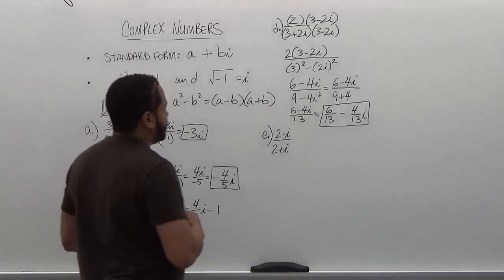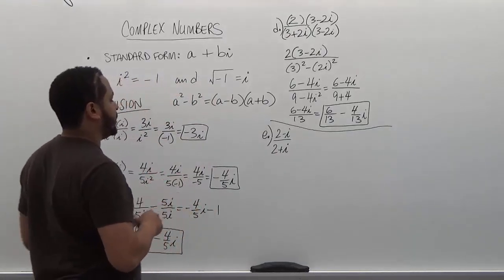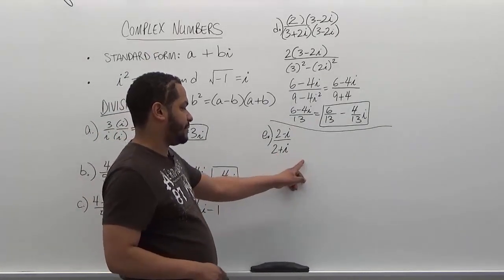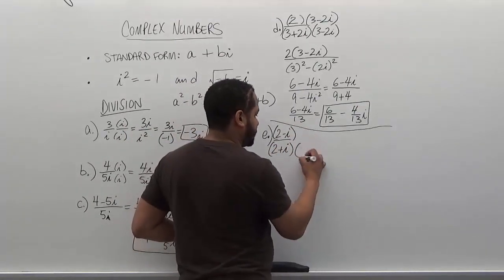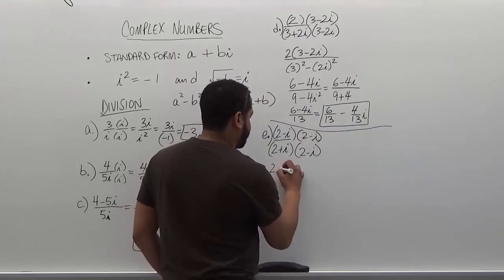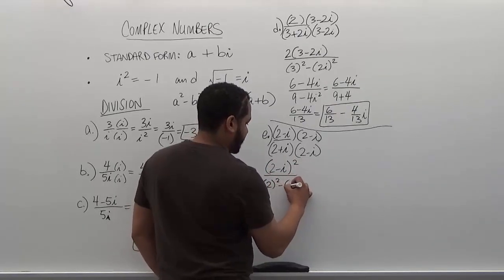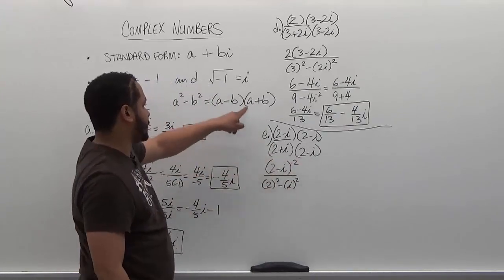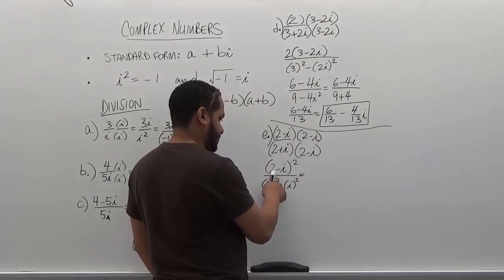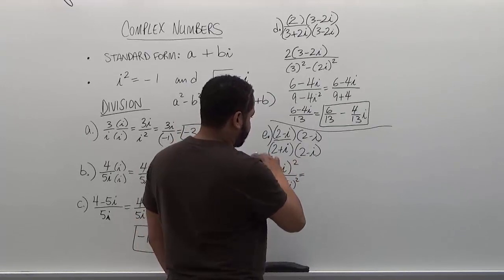Moving on to the last problem, we have two minus i over two plus i. We need to conjugate our denominator. The denominator has the positive term, so we multiply both top and bottom by two minus i. Technically what we have is (2 − i)² over the difference of two squares, which is two squared minus i squared. We could use the perfect square formula, but I'll just FOIL and expand this out.